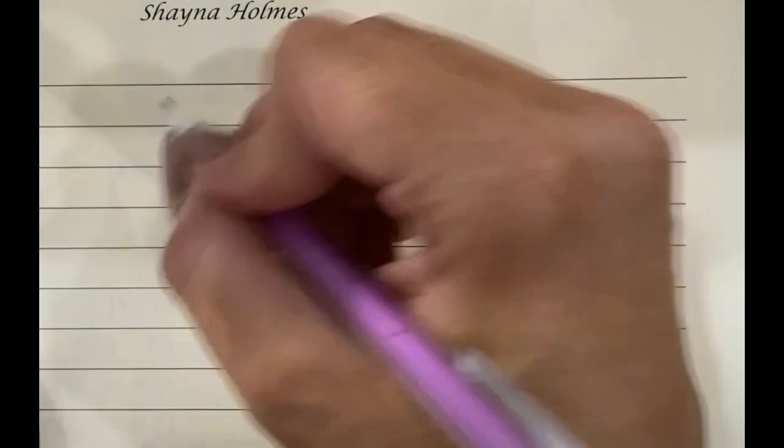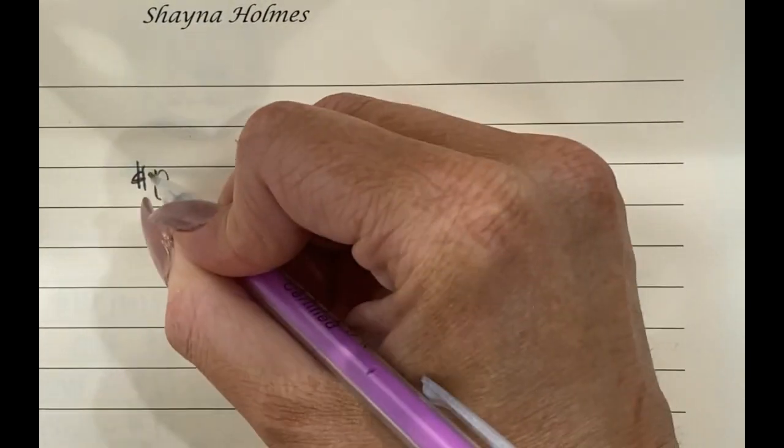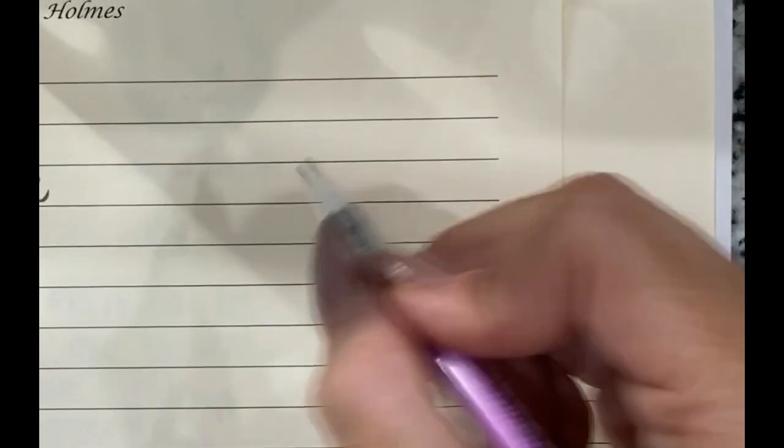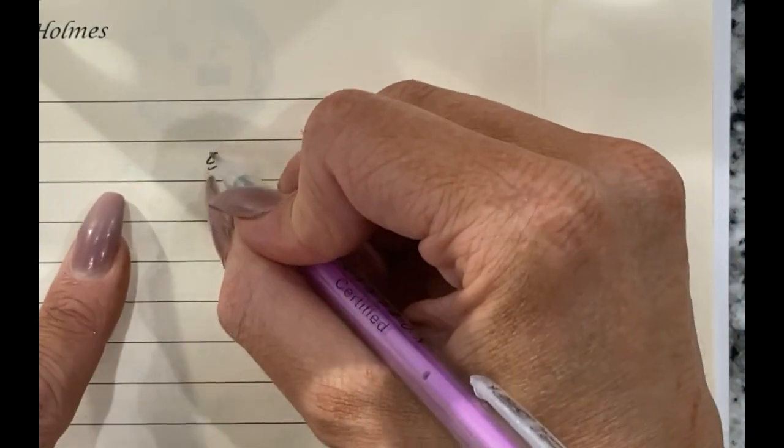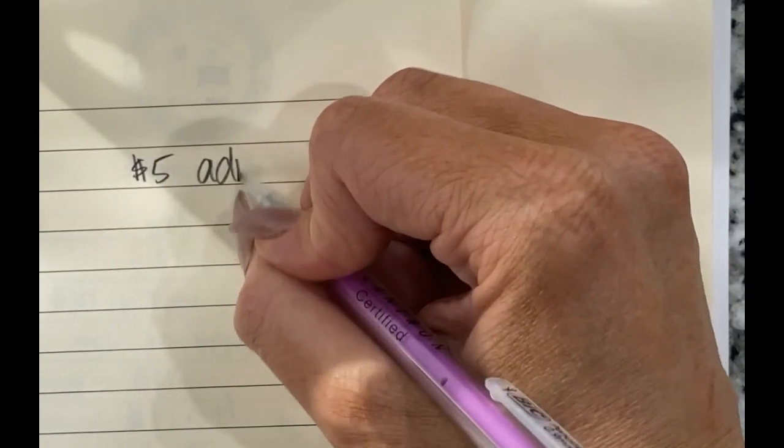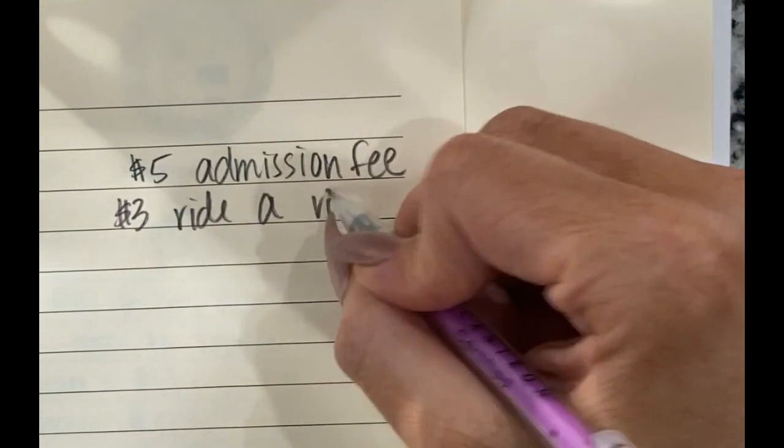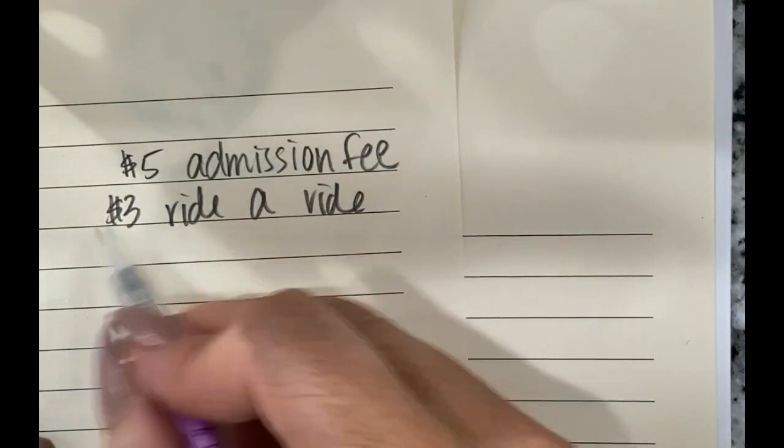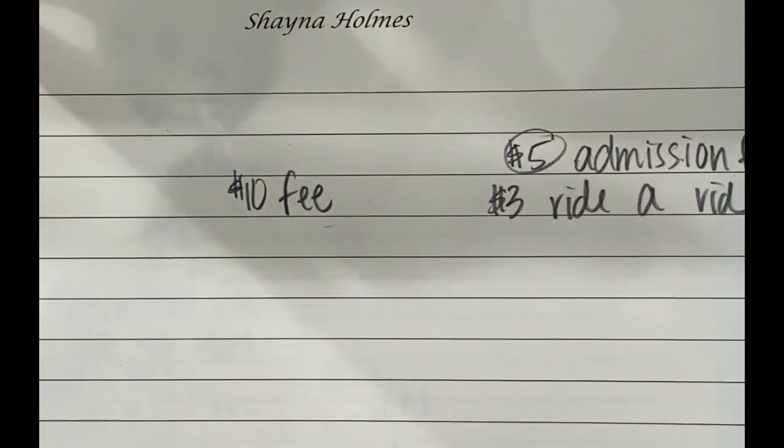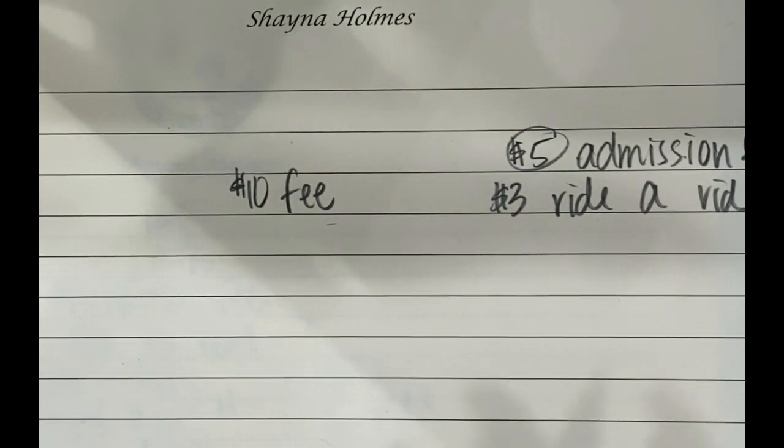Okay. So I want to kind of explain something or work through this kind of, so if I have a $10 fee, think of that kind of like, let's say that I was going to an amusement park and I had a $5 admission fee. Okay. So that means that, and then let's say that it costs $3 to ride a ride, whether I ride any rides, I still have to pay this admission fee. So this $10 fee right here, it has to be paid no matter how many hours go past.